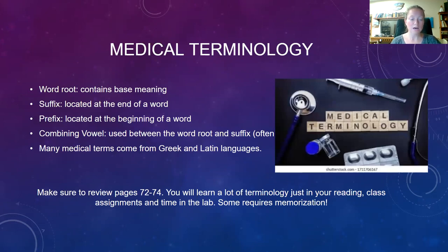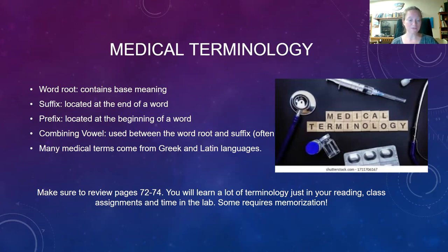Medical words are formed from Greek and Latin words. We don't tend to use these in everyday dialogue, but we do use them daily when communicating with other healthcare workers. Medical terminology helps us identify diseases and affected areas of the body in a more precise and specific way. To learn medical terminology, you need a basic understanding of word parts. The word root contains the base meaning of the word. The suffix comes at the end and alters the meaning of the root word. The prefix comes at the beginning and also alters the root. Combining vowels are used between a word root and the suffix to ease pronunciation — this is usually an O.